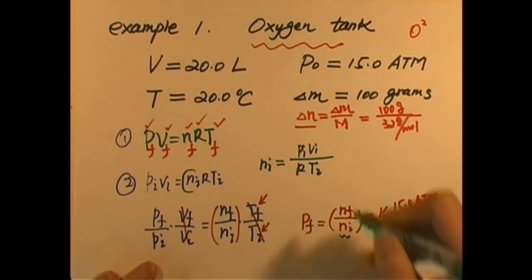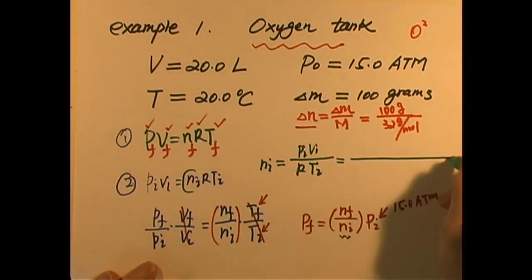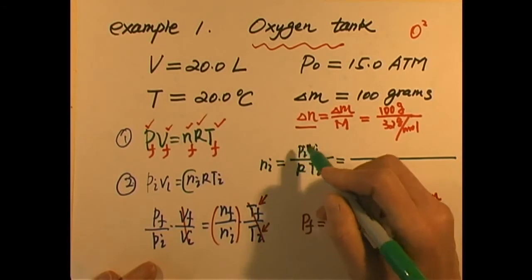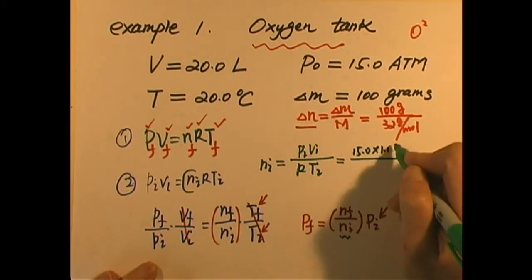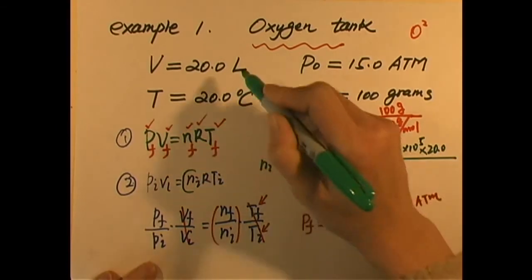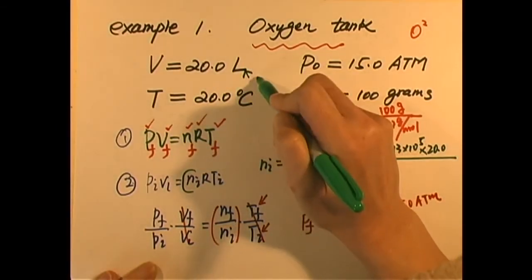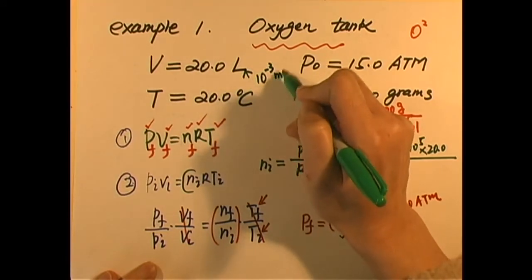Now we have to be very careful, since we're going to do calculation. Now everything must be in SI unit. P initial, that is 15.0 ATM, you have to convert to SI unit, 1.013 times 10 to the 5 Pascal, gives us the pressure. The volume is 20.0 liters. Now, 1 liter is 10 to the negative 3 cubic meters.